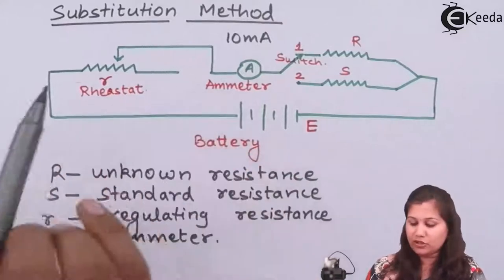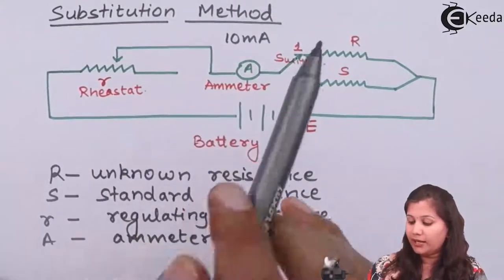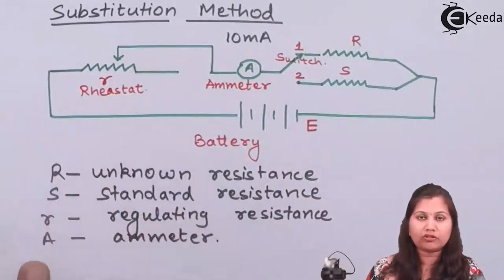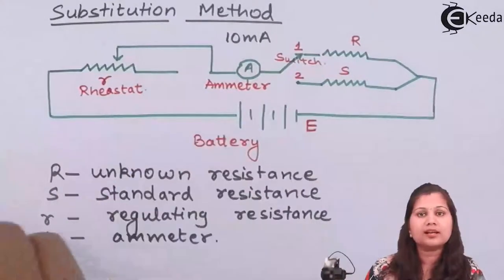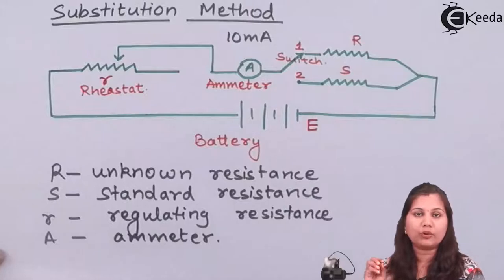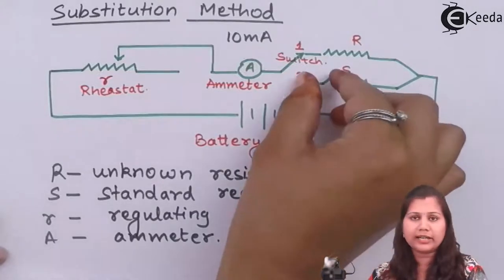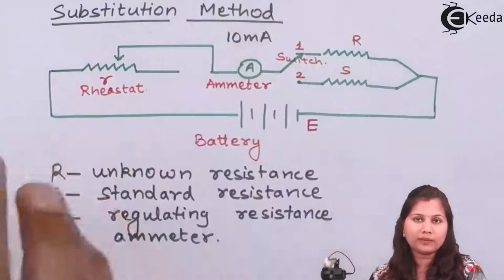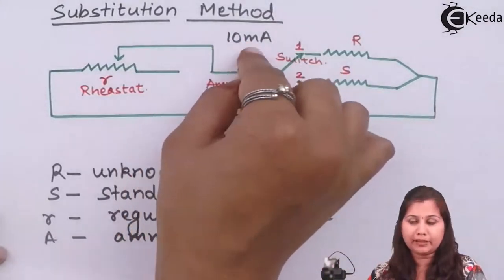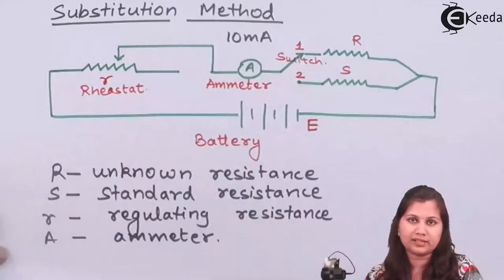Now we are not going to change the settings of the rheostat and the ammeter — we are not going to make any change in the circuit. Now when the current is again constant at 10 milli amperes, and the rheostat settings have not been changed, we will change the settings of this standard resistance. In the standard resistance we have various dial resistors, so we are going to change the value of the standard resistance — for example putting 10 ohms, 11 ohms, 12 ohms — until we get the same deflection of 10 milli amperes as we obtained in the case of the unknown resistance.